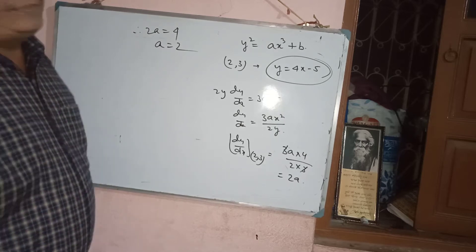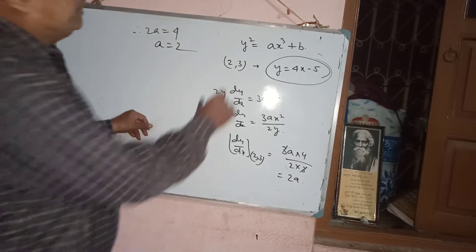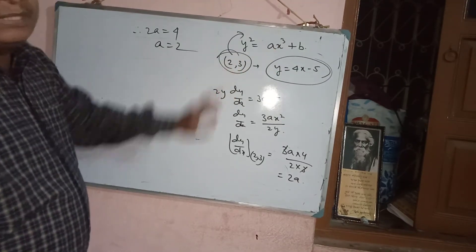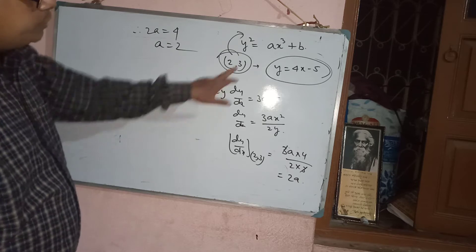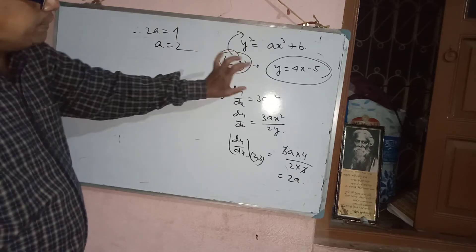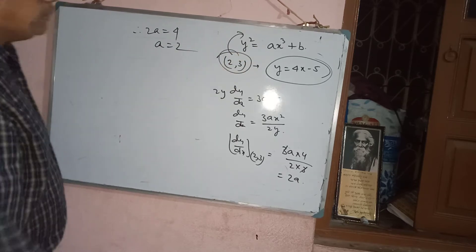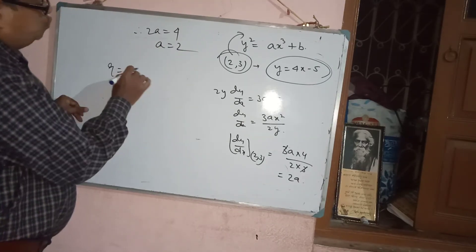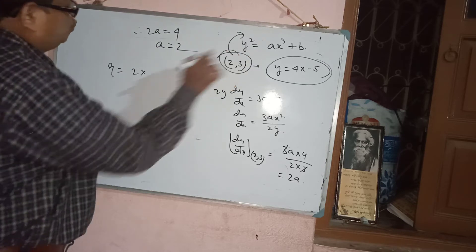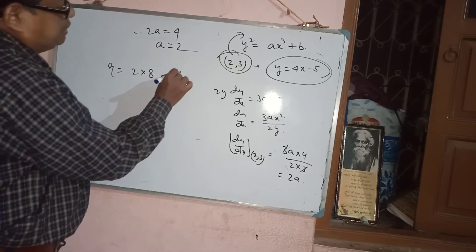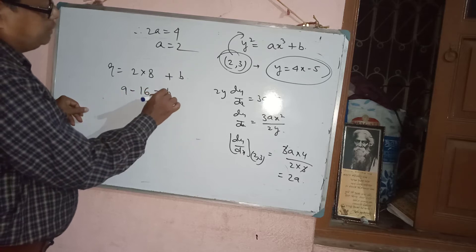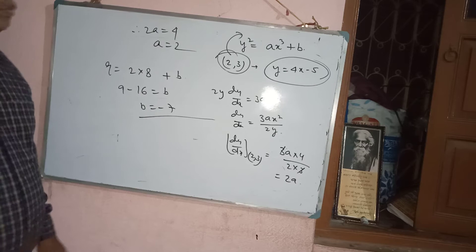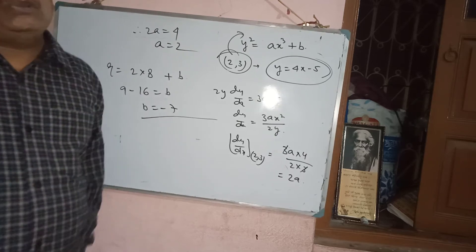To find B: the point (2, 3) lies on the curve y² = Ax³ + B. Substituting: 9 = A × 2³ + B = 2 × 8 + B = 16 + B. So 9 - 16 = B, giving B = -7. Therefore A = 2 and B = -7.